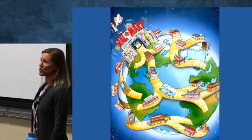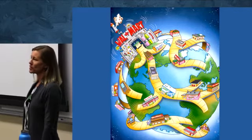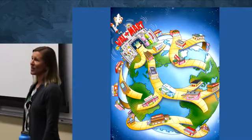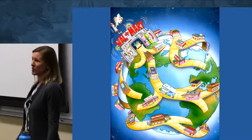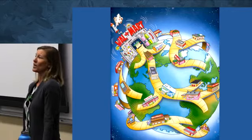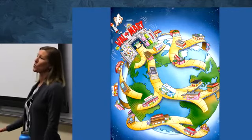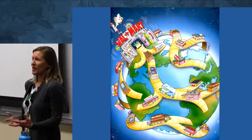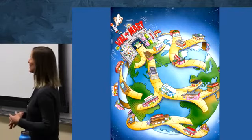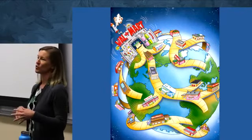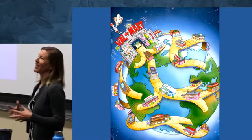Plants and animals get introduced into regions they've never been before, both deliberately and accidentally. Some of the deliberate introductions are made because plants and animals have some sort of use for us. With respect to plants, we've often imported plants that are aggressive growers — we need them to provide forage for livestock or to grow aggressively and stabilize hillsides.